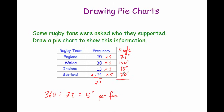Now I check by adding up the four angles: 75 plus 150 plus 65 plus 70. That gives us 360 degrees, which is exactly what we needed for our pie chart.